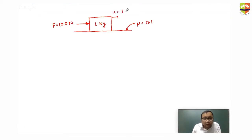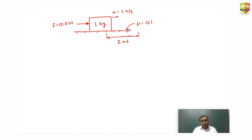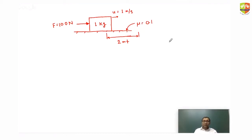A force of 100 newtons is applied horizontally on a block of 1 kg mass. Initially its velocity was 1 m/s. The coefficient of friction between the block and the ground is 0.1. Find the final velocity when this block moves by 2 meters. Use the work-energy theorem — don't use Newton's laws of motion for this.